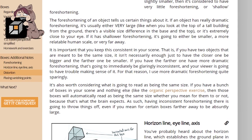It is important that you keep this consistent in your scene, that is, if you have two objects that are meant to be the same size, it isn't necessarily enough to just have the closer one be bigger and the farther one be smaller. If you have the farther one have more dramatic foreshortening, that's going to immediately be glaringly inconsistent, and your viewer is going to have trouble making sense of it. For that reason, I use more dramatic foreshortening quite sparingly.